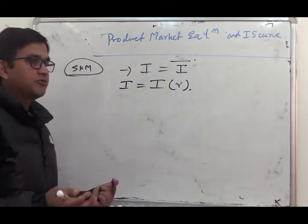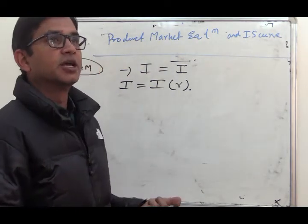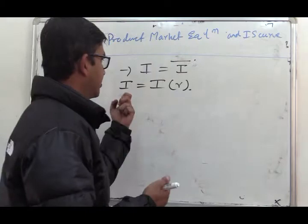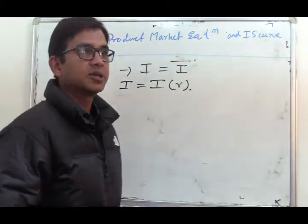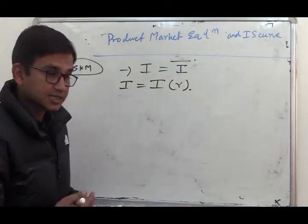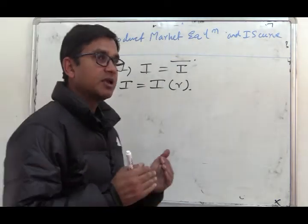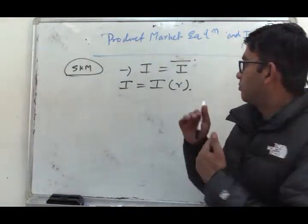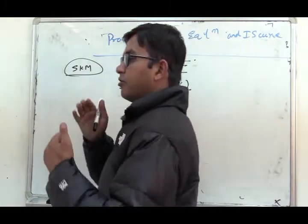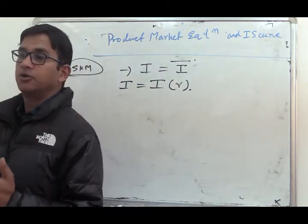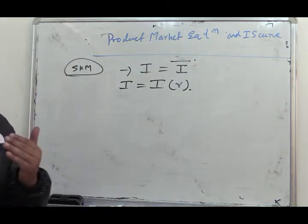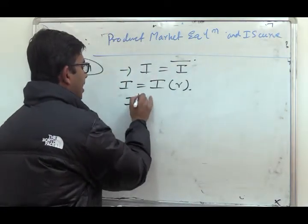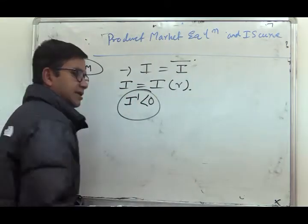We can explain the inverse relationship between investment and interest in two ways. First, if we consider the marginal efficiency of capital, private investment is inversely related to the rate of interest. Or in simpler form, whenever any investor is going to invest, they have to take a loan. The rate of interest will determine the volume of the future liability. So higher the rate of interest, lower will be the borrowing and lower will be private investment. Thus, I' is less than zero.